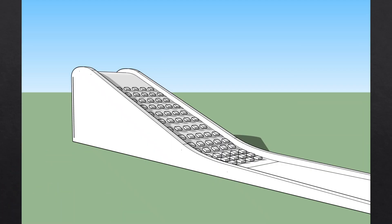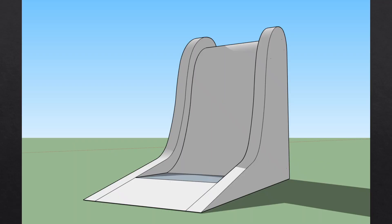In the case of a chute or channel spillway, roughness elements provided throughout the length of the spillway obviously reduce a lot of the kinetic energy. To estimate how much energy is dissipated by these methods, model studies and empirical equations are often required. Another very effective method of reducing energy at the downstream is the creation of a hydraulic jump, which will be discussed in detail in a later video.